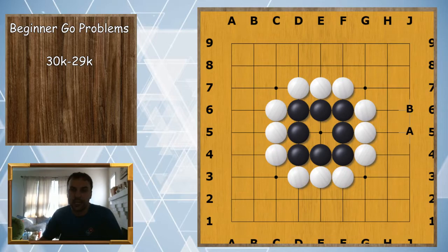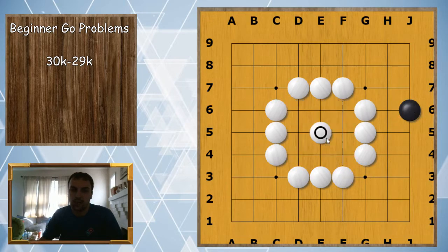Is black alive or dead? In this case black is dead because it only has one eye and white can play and capture.